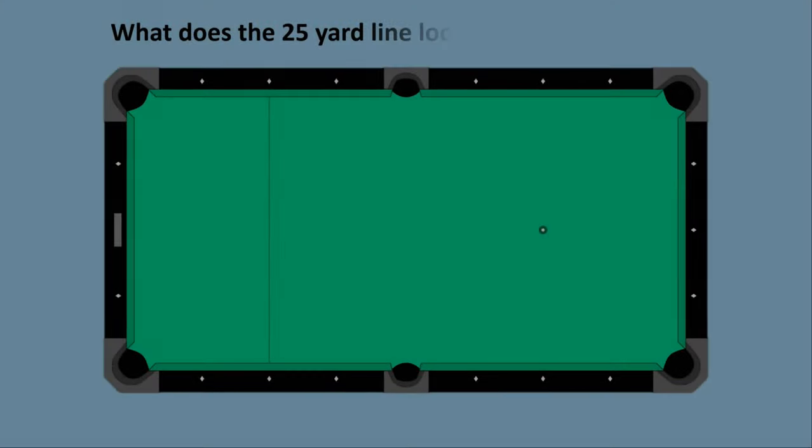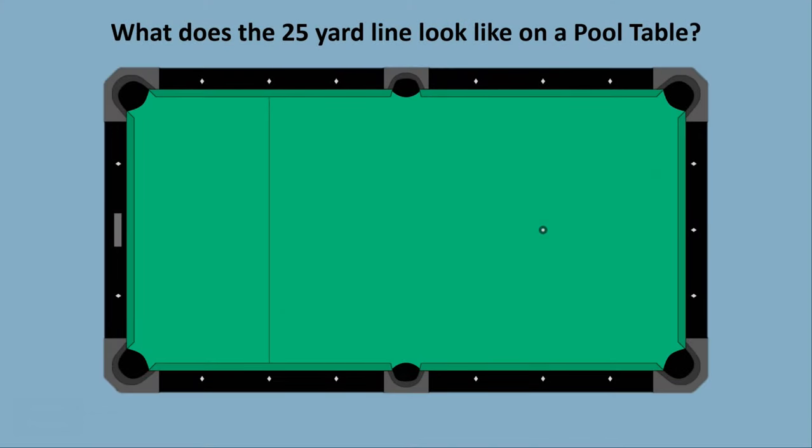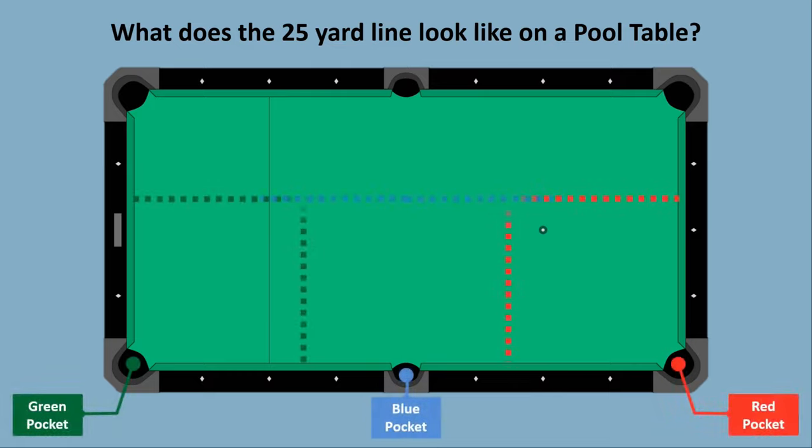If you zoom up on your pool table using Google Maps and ask Google to show you where the 25-yard line is, this is what it would look like. If your object ball is sitting anywhere on one of these lines, and you intend to pocket the ball into one of the bottom pockets, then your object ball is sitting on the 25-yard line, and all the math we just did applies to that object ball.